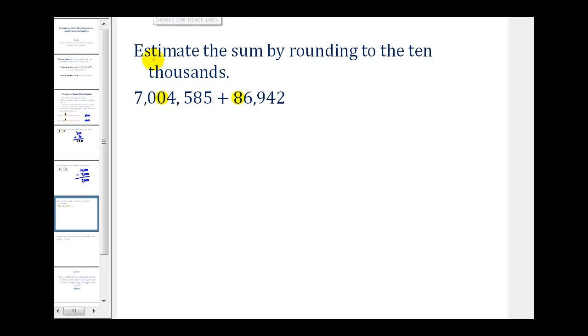The digit to the right is our decision maker, which tells us to round up or round down. This four tells us to round down. So we don't change the zero. And everything to the right is replaced with zero. So this rounds to 7,000,000.